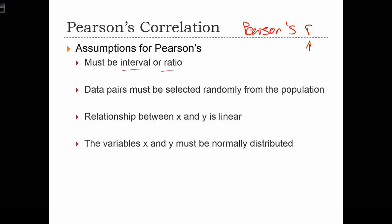Some of the assumptions in order to make inference based on a Pearson's correlation is that the data pairs must be selected randomly from the population, so we have a random sample. The nature of the relationship between x and y must be linear. So we have to do a scatter plot first to make sure that the scatter plot looks like a linear relationship. If it does look like a linear relationship, then we can use Pearson's R. If not, then we have to use a different kind of statistic.